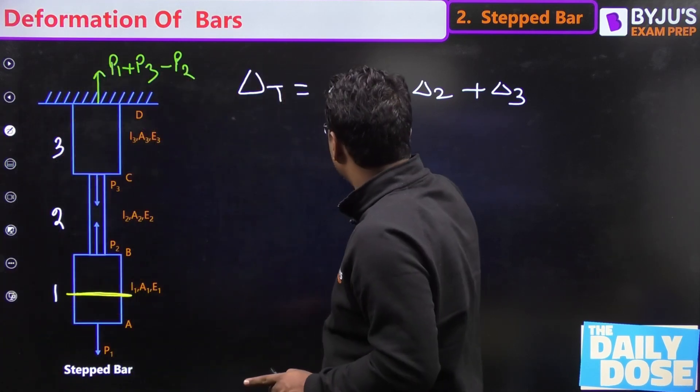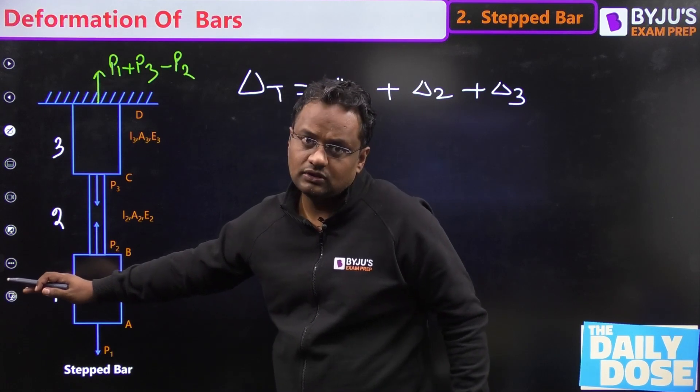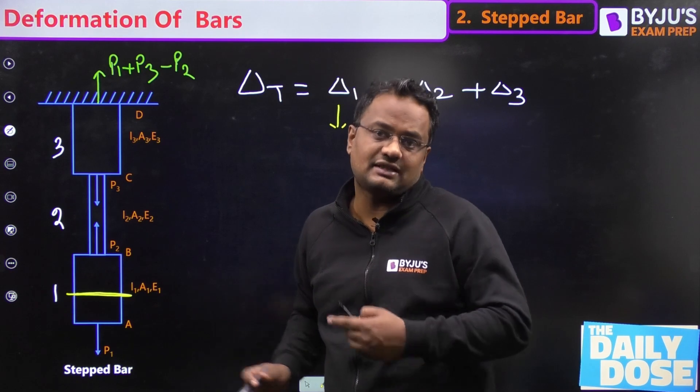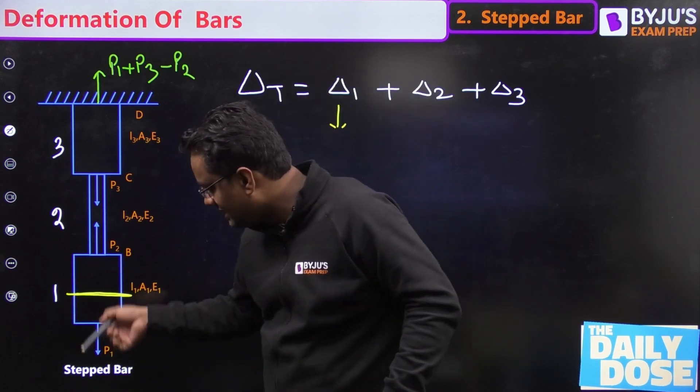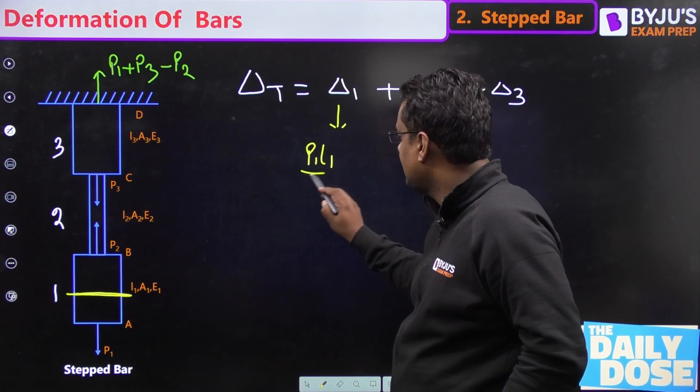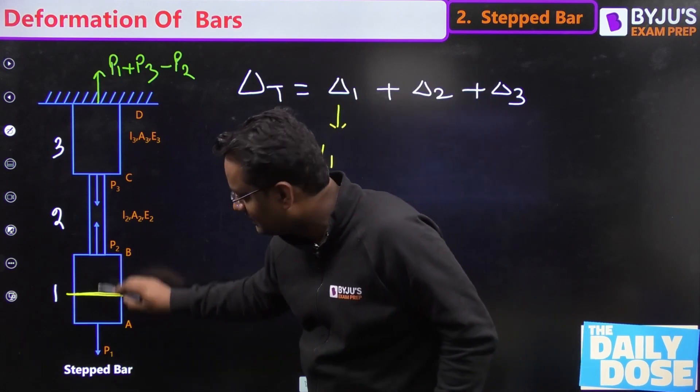Now delta 1 will be, see either from top or bottom, the away going forces from the section is plus and towards coming the section is minus. Now P1 is going away, so away means tension. So P1 L1 by A1 E1 for this whole bar. For this whole bar, area is constant so we can apply this formula.